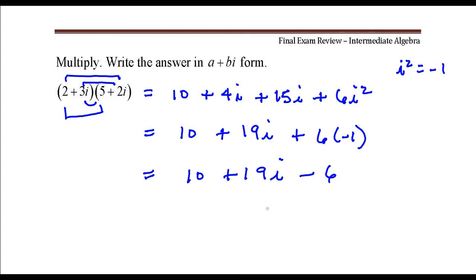I can combine these two. 10 minus 6, that's 4. My final answer, 4 plus 19i, that is in standard a plus bi form.